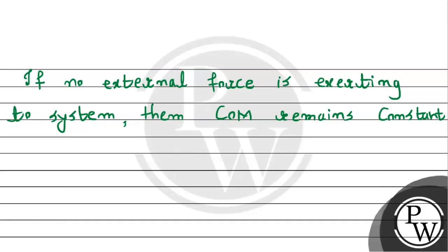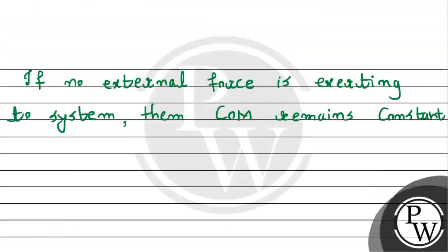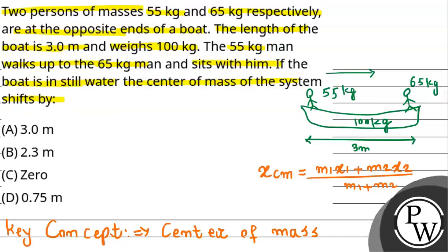If external force is not applied to the system, then the center of mass will not shift, it will remain constant. Now if you see, initially the boat was in a stable position when both men were at opposite ends. But here the man is moving towards the 65 kg man and there is no external force acting on the system.